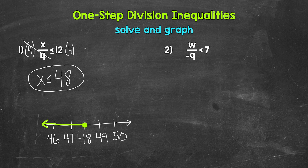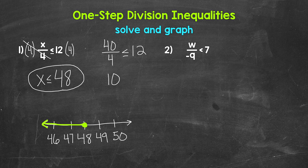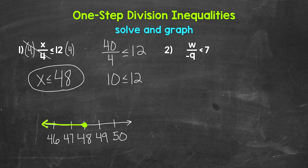Let's check a solution to make sure we are correct. We need anything less than or equal to 48 — let's use 40, since we are dividing and it works nicely with four. 40 divided by four is less than or equal to 12: 40 divided by four gives us 10, and 10 is less than or equal to 12 — correct. Let's also check 48 mentally: 48 divided by four is 12, and 12 is less than or equal to 12 — so 48 works as well.